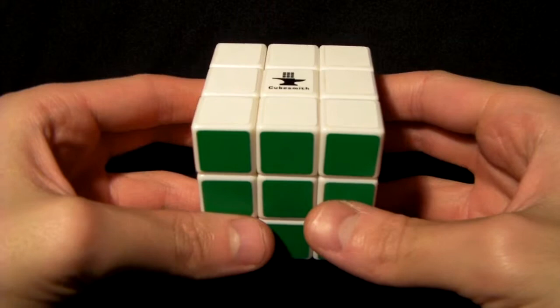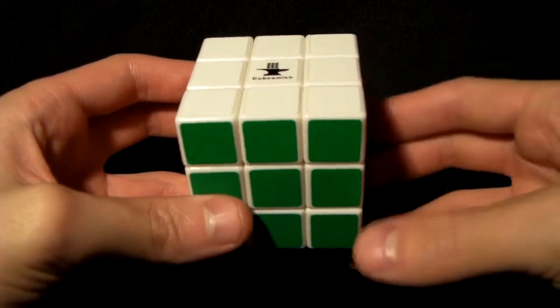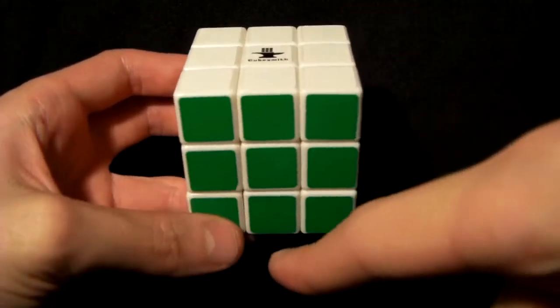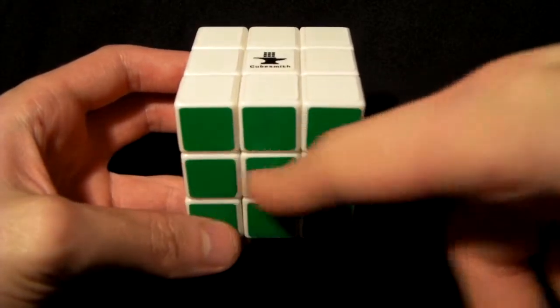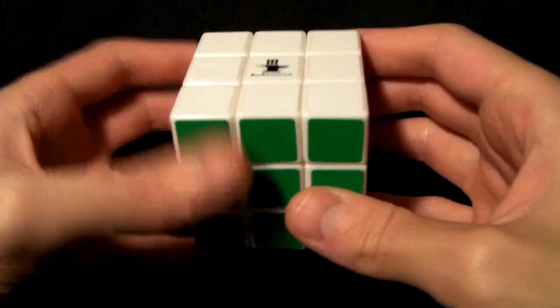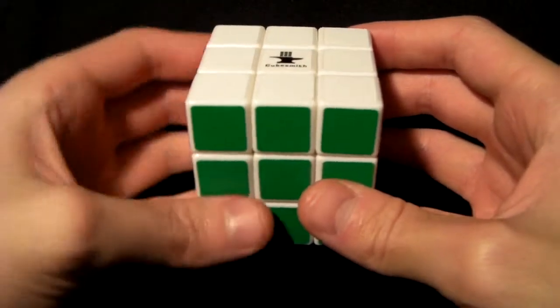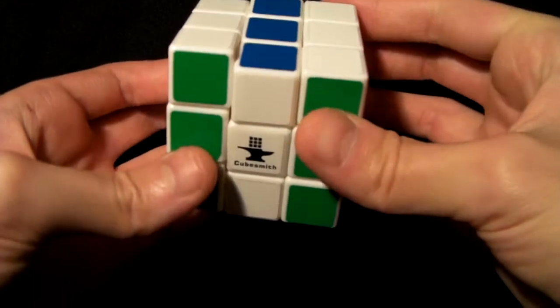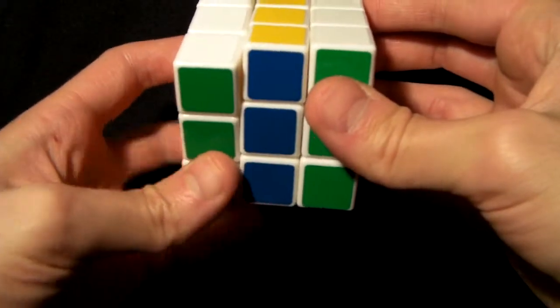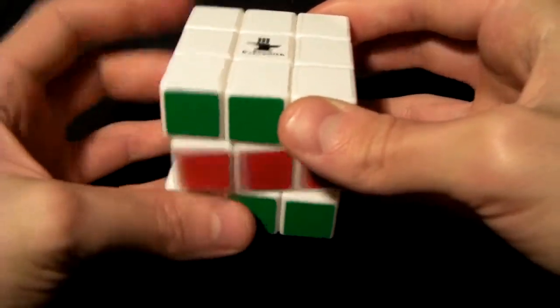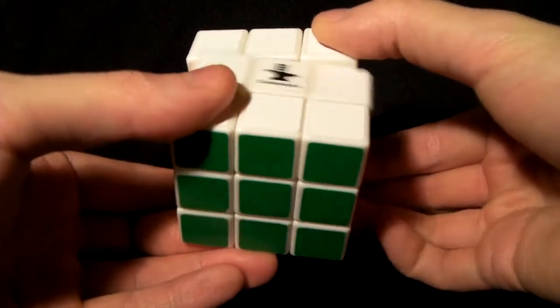There's also inner layer turns, and these manipulate the middle layer. There's only three of them: M for middle, which is this layer here; E for equatorial, which is this layer here, the horizontal one; and S for standing, which is this layer here. You're only ever probably going to see the middle layer variations. The single layer middle turns are as follows: we have M, M prime, and M2. There's also E, E prime, E2, and S, S prime, S2. Like I said, the only one you're probably going to see is the middle one.